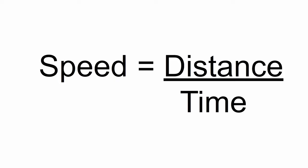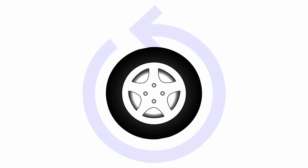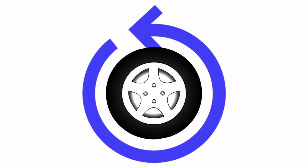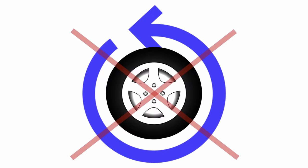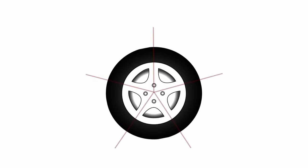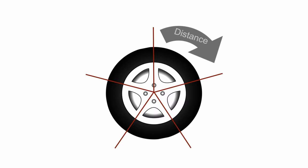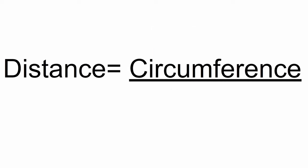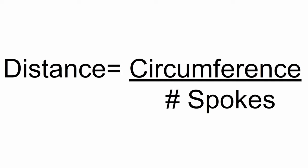First, let's find the distance. We need to figure out the distance my wheels need to travel so it seems like it didn't move. We don't need the wheel to go a full rotation, but to where the pattern of the wheel repeats. In my case, my wheel has five repeating patterns, so it only needs to go this far to get the same image captured. So this would be the circumference of the wheel divided by the number of spokes, and this would be our distance.